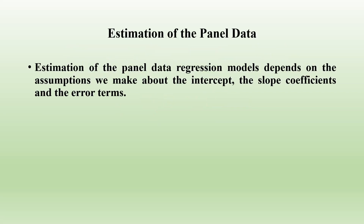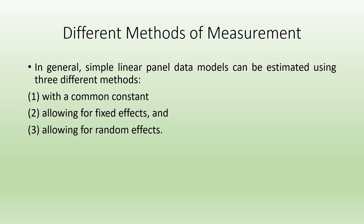The estimation of the panel data regression model depends on the assumptions we make about the intercept, the slope coefficients, and the error terms. Depending upon this, the linear panel data models can be estimated using three different methods: one, common constant; second, allowing for the fixed effects; third, allowing for the random effects.